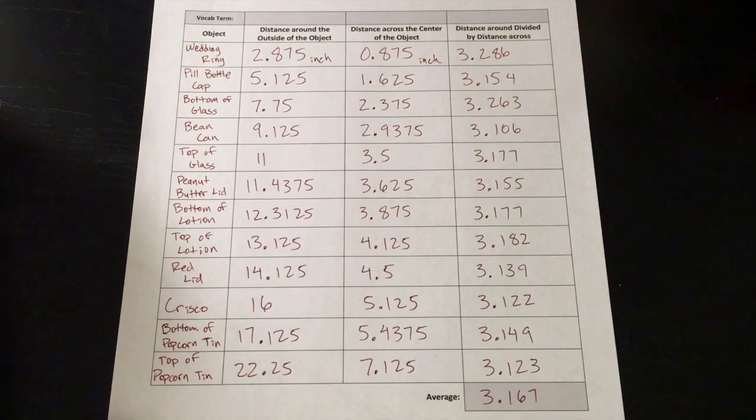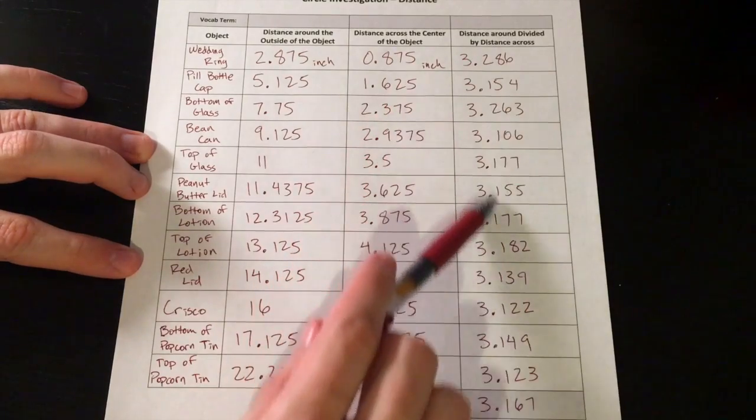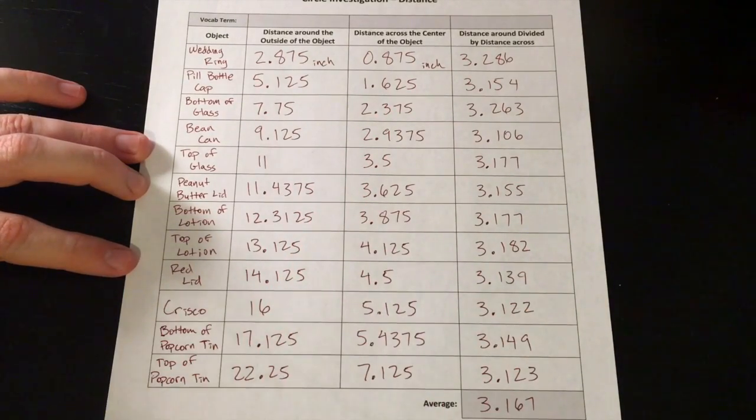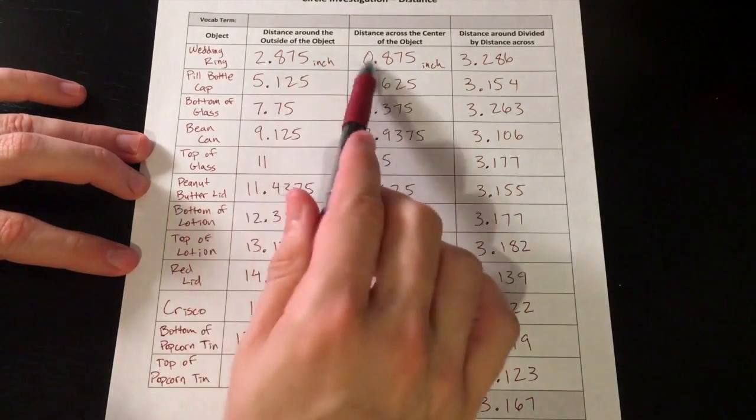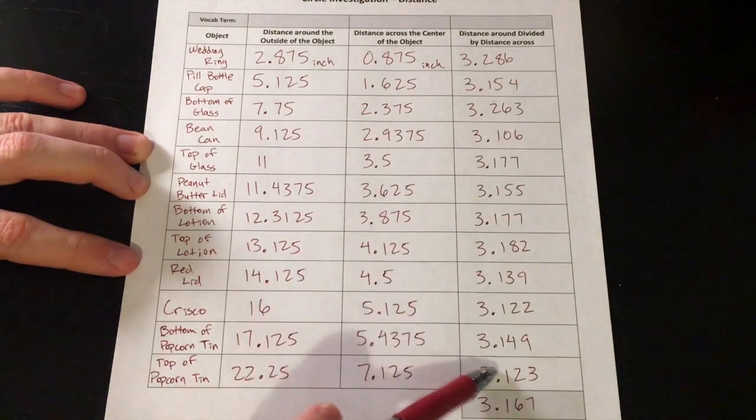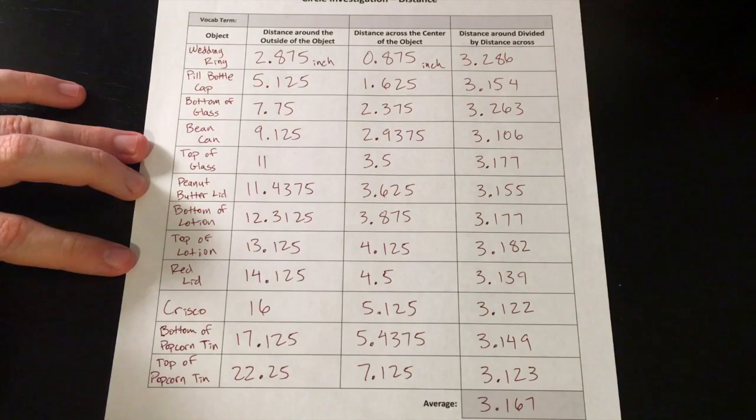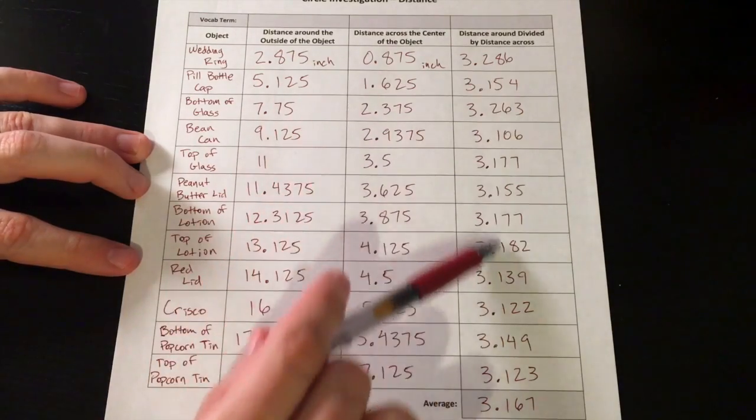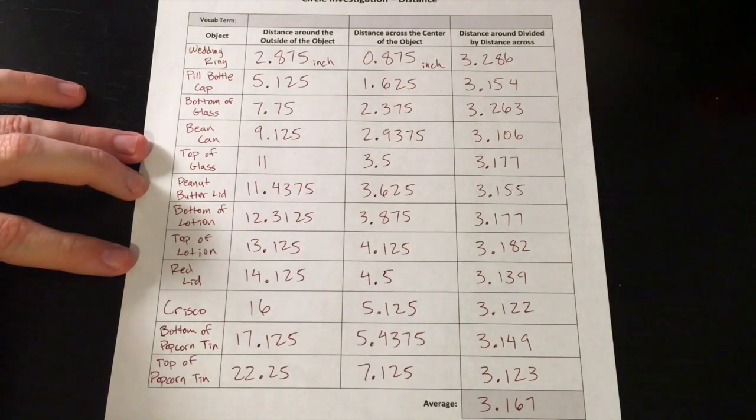All right, welcome back. Obviously your numbers are going to be different than mine, because I had different objects than you, but our results should be pretty similar. What do you notice about this last column? Regardless of the size of the circles, this ratio was actually pretty consistent. It was pretty close to a number that you've probably heard of previously, it's called pi.